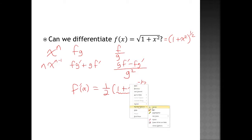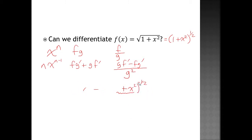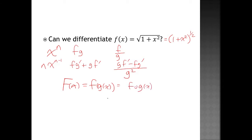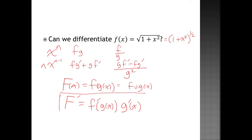As it turns out, if I have a function within a function — like in this case, if big F of x happens to be a function of a function, f of g of x, or as someone pointed out in class, this is fog of x — it turns out that the derivative of the function happens to be the derivative of f evaluated at g of x, times the derivative of g of x. So it's basically the derivative of the outermost function evaluated at the inside function, times the derivative of the inside function.